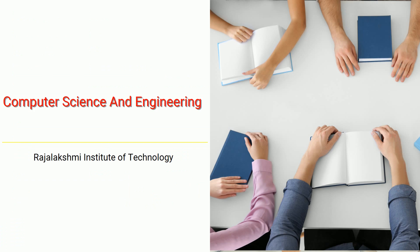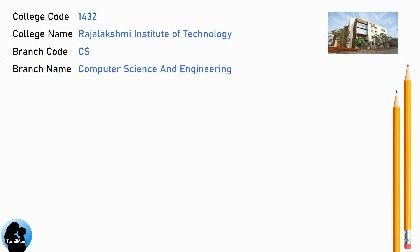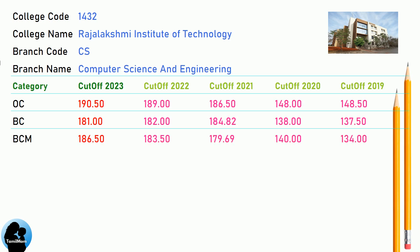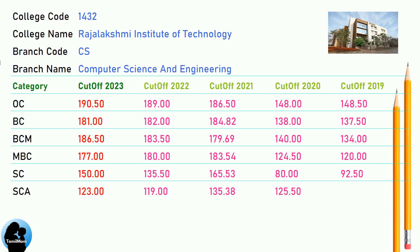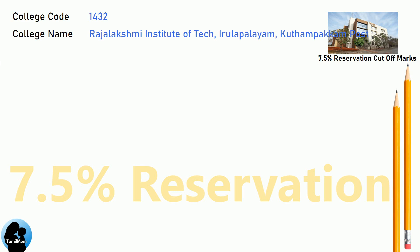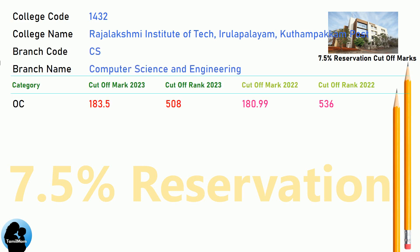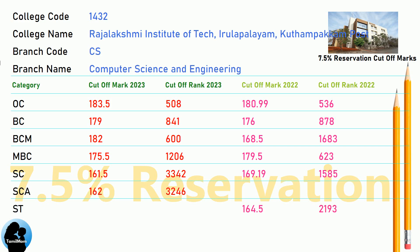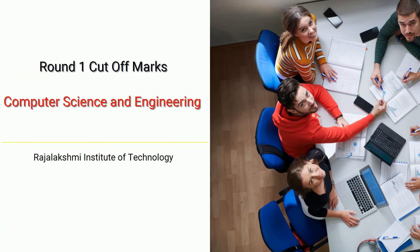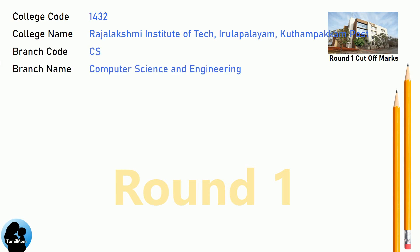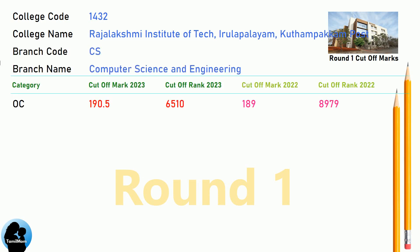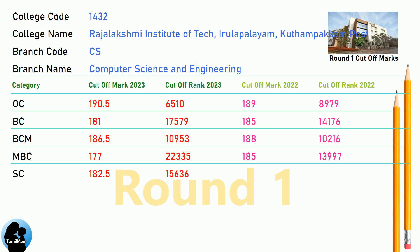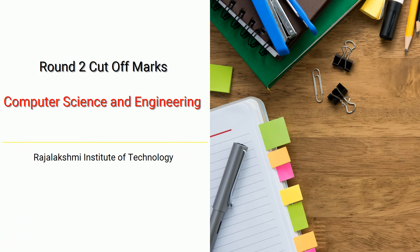DNEA 7.5 Reservation Cut-Off for Rajalakshmi Institute of Technology in Computer Science and Engineering. DNEA 8.5 Reservation Cut-Off and DNEA 9.5 Reservation Cut-Off for Rajalakshmi Institute of Technology in Computer Science and Engineering.